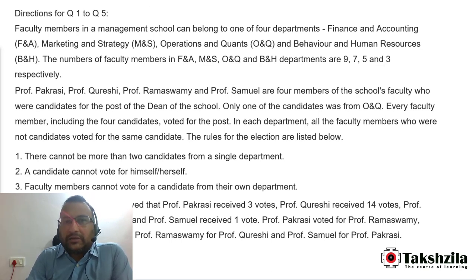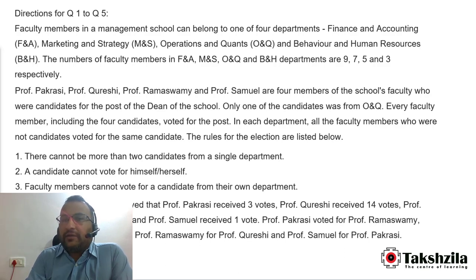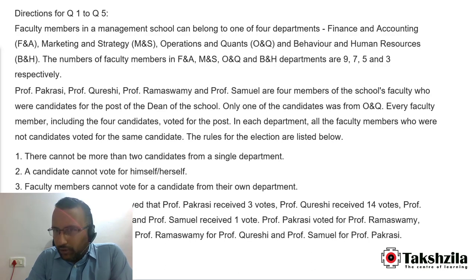Faculty members in a management school belong to four departments: F&A, M&S, O&Q, and B&H. The number of faculty members are 9, 7, 5, and 3 respectively.